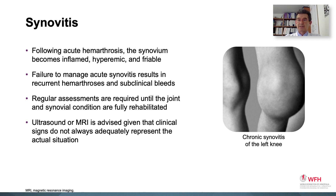From the perspective of synovitis, which is the initial phase of joint inflammation, it usually occurs after acute hemarthrosis, and the synovium becomes inflamed, hyperemic, and friable. Failure to manage this acute synovitis usually results in recurrent hemarthrosis and subclinical bleeds. Regular assessments are required until the joint and synovial condition are fully rehabilitated, including range of motion, muscle strength, and joint speed.